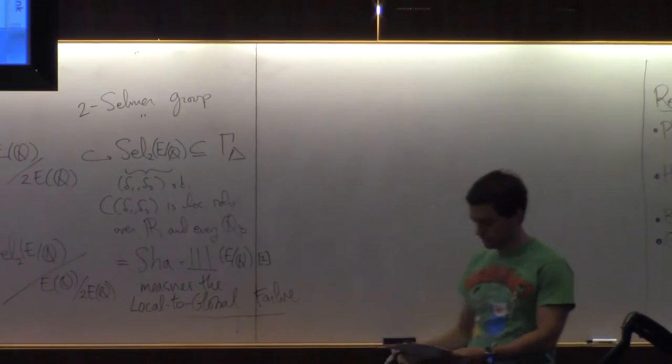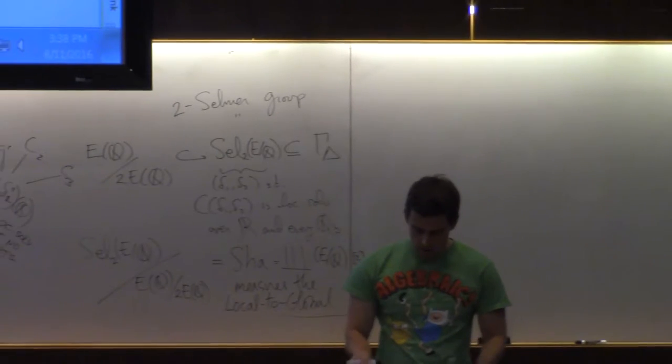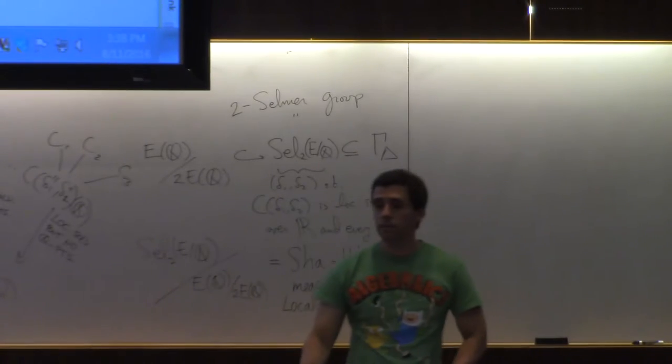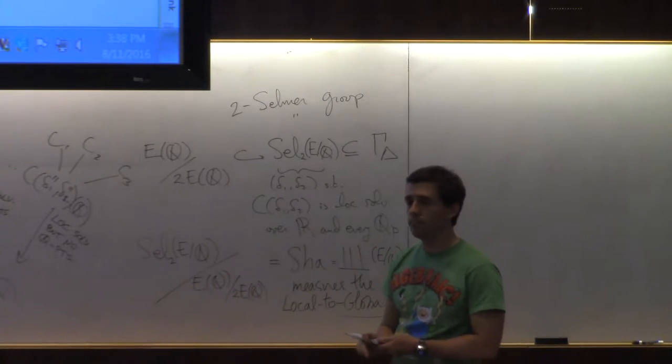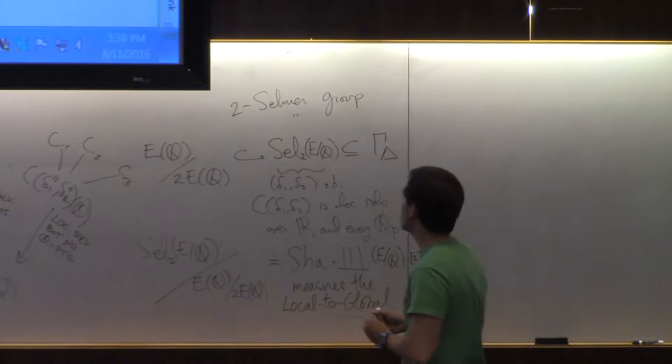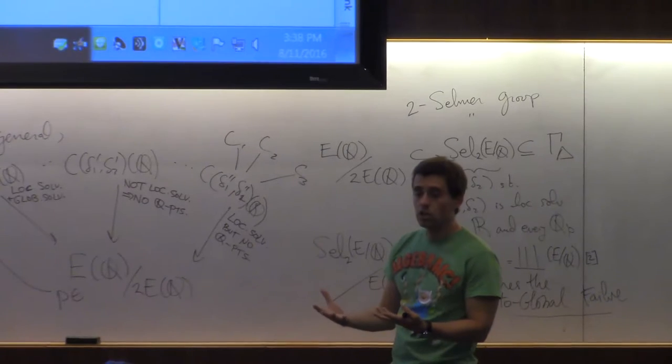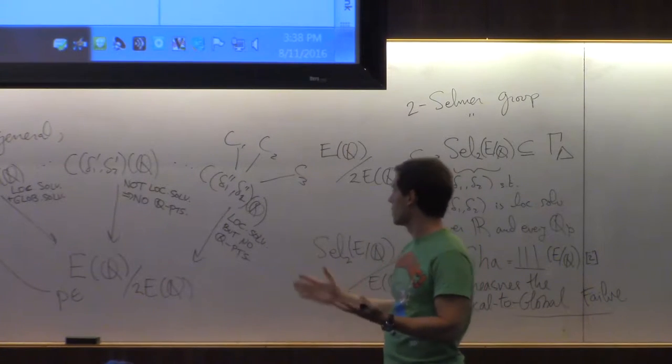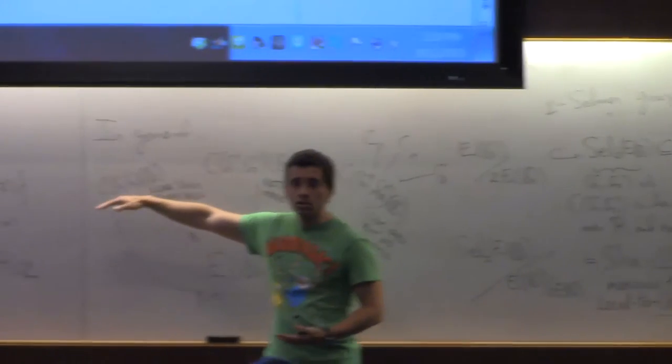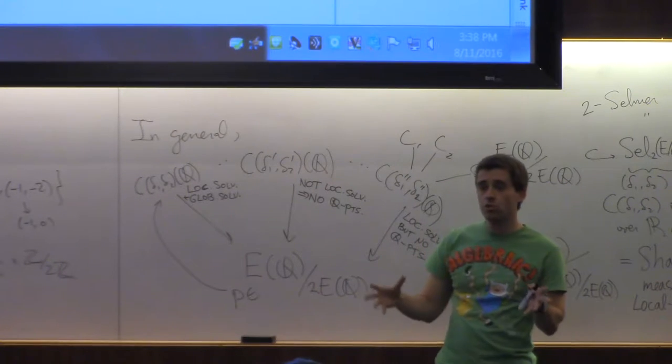So, are these c delta elliptic curves? Those are called twists of elliptic curves. So these are some other, this first layer, these are some other like genus one curves.